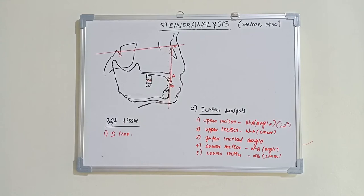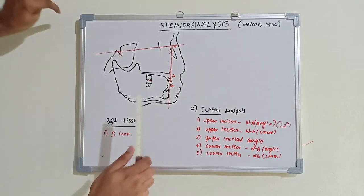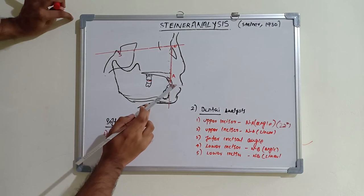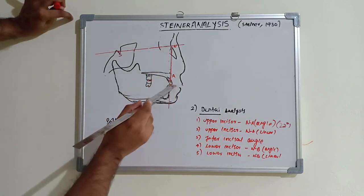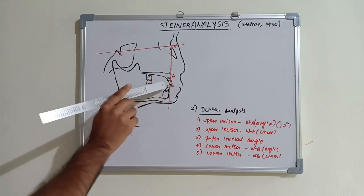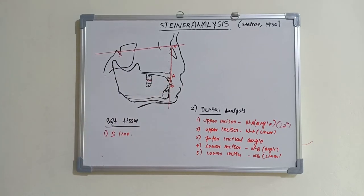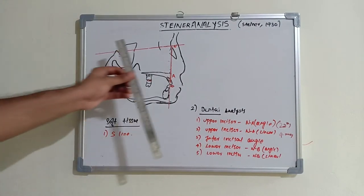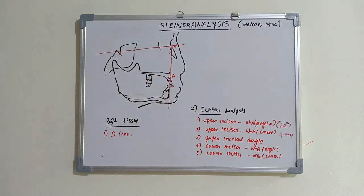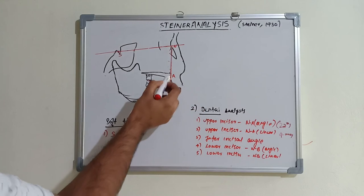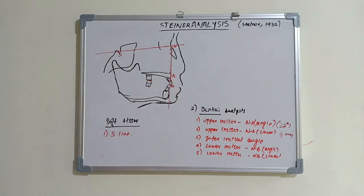The next measurement is the upper incisor to NA linear measurement. This is the distance in millimeters from the NA line to the tip of the upper central incisor, with a normal value of 4 millimeters. If there is greater proclination - the incisor placed more forward - this distance between the NA line and the maxillary incisor increases.